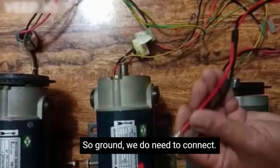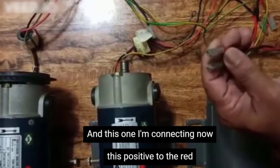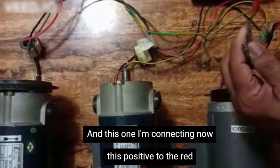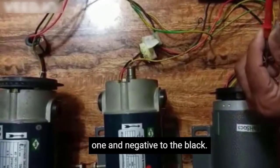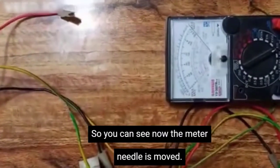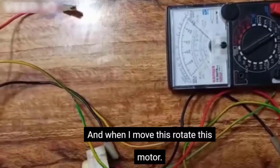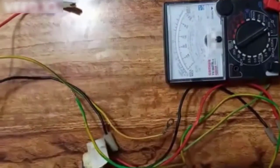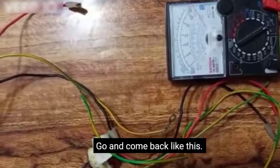So ground, we now need to connect. And this one I am connecting now, this positive to the red one and negative to the black. So as you can see now, the meter needle has moved. And when I rotate this motor, it will work. It goes and comes back, goes and comes back like this with a reverse moment and forward moment.